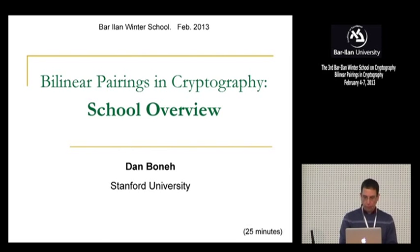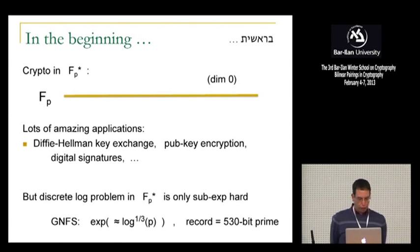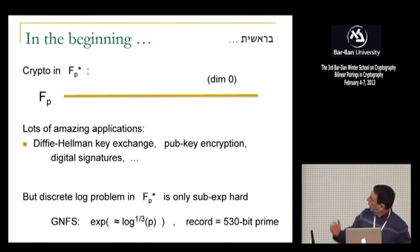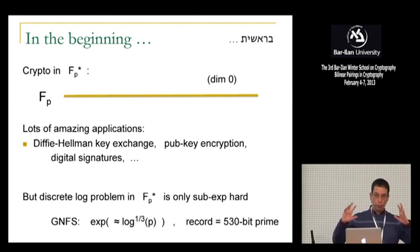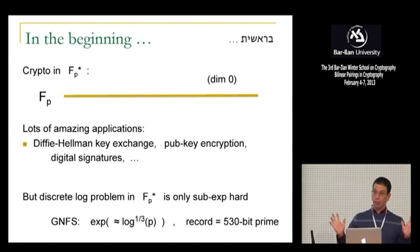But let's start at the beginning. So in the beginning, when public key crypto started, basically in the beginning there was the line, the projective line. Public key kind of started with using modular arithmetic, finite fields, denoted by FP or FP star. And of course, when this came out, about 35 years ago, lots of amazing applications emerged: Diffie-Hellman key exchange, public key encryption, digital signatures. And everybody was happy.